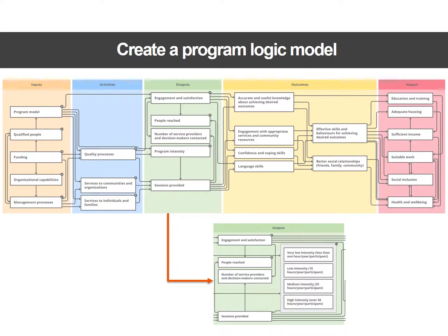This is a picture of the generic logic model that we've developed for immigrant and refugee serving agencies — you will be able to customize this for yourself. For example, if your outcomes include education and training, you would keep that outcome; if not, you wouldn't. You would also identify the people that you're serving, the program intensity, and so on. There's a lot of detail here, so we'll develop another video to cover that.